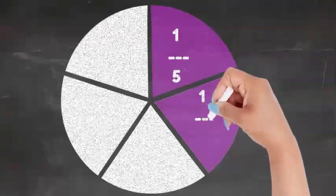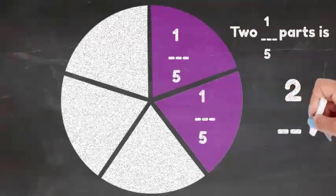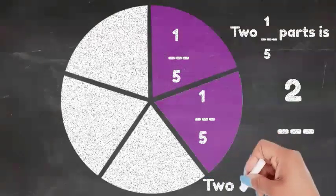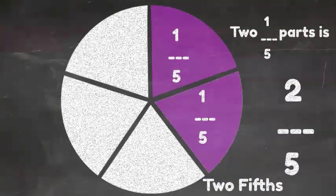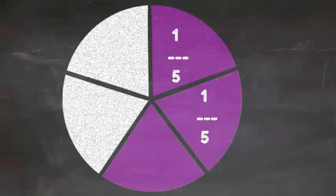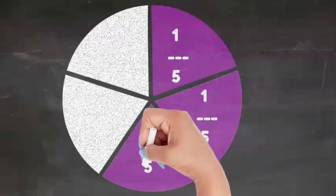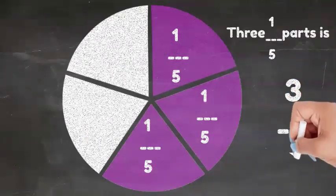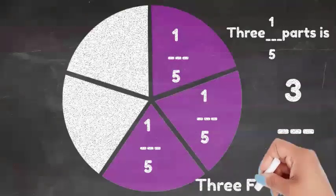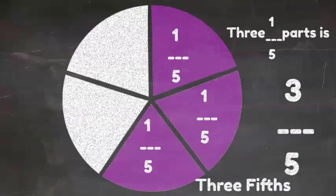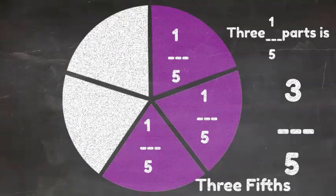What if we shade another portion? Well, that's another one-fifth shaded. So now we have two one-fifth parts shaded, written as two as the top number, the numerator, five as the bottom number, the denominator, and we say this is two-fifths. What if we shade another one-fifth? Now we have three one-fifths parts. We call this three-fifths. Three as the numerator, five as the denominator, three-fifths.